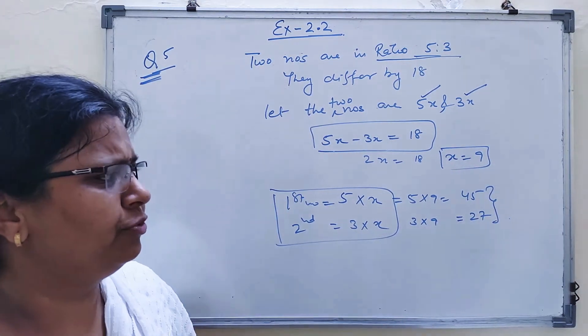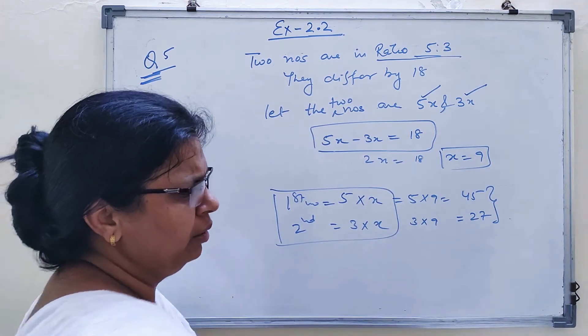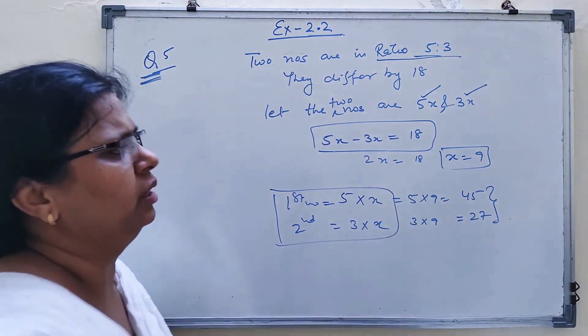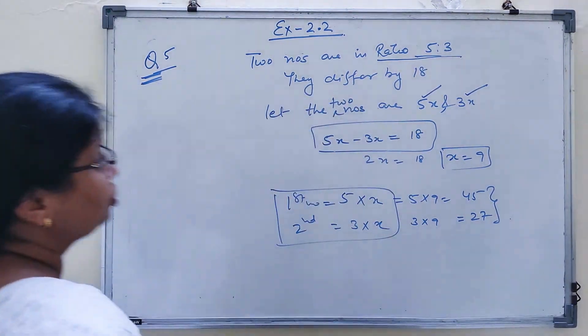Just check the difference, you will get 18. And check their ratio, that is 5 is to 3. This is how you have to solve the question.